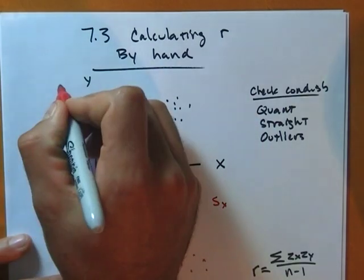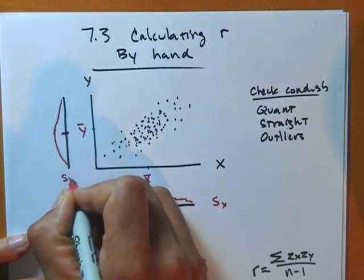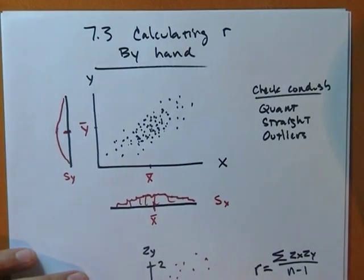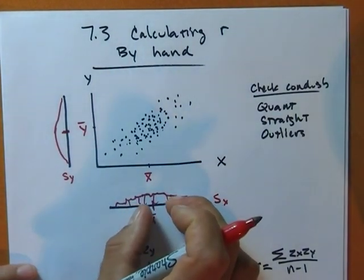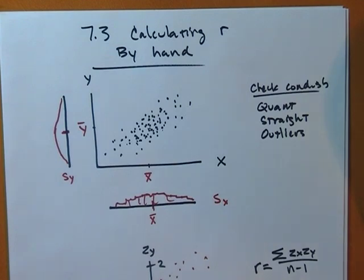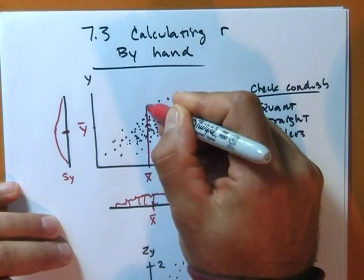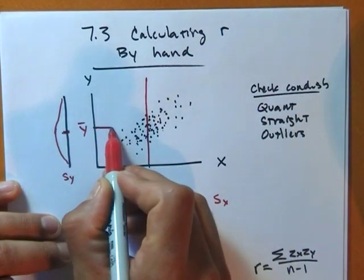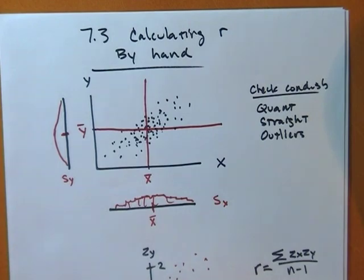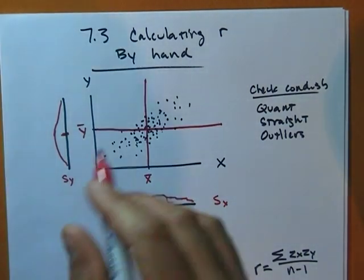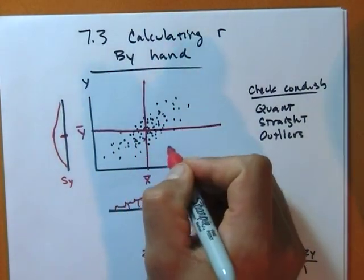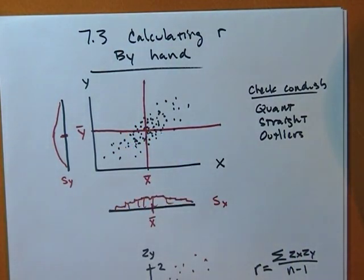Remember what the standard deviation is — it's just the average distance to the mean. We find z-scores from that. The r-value has no units, so it must be calculated from something with no units, and it is: it's calculated from z-scores. So what we actually do is change all of these x-values — whatever they are, feet or whatever — we change them to their z-scores.